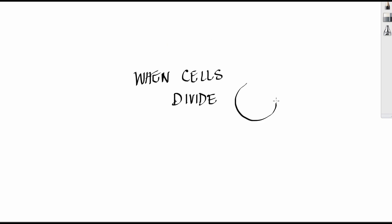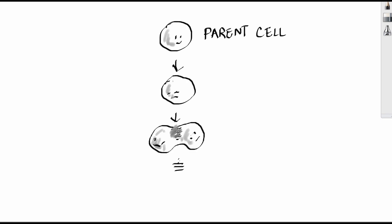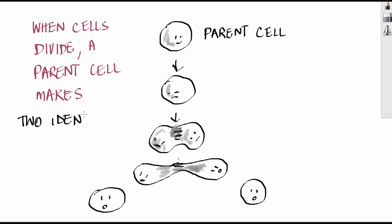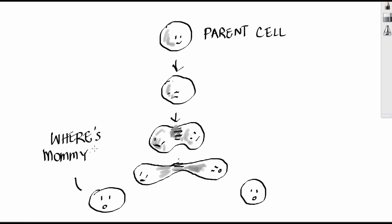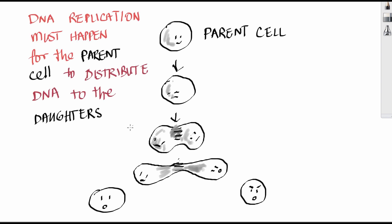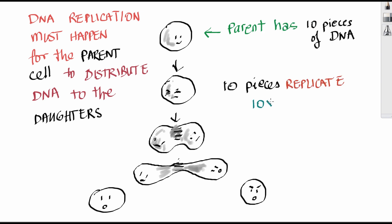When cells divide, they do DNA replication. When parent cells turn into daughter cells, then the parent disappear and the daughters are left. DNA replication must happen for the parent cell to distribute DNA to the daughters. So the parent has 10 pieces of DNA, and the 10 pieces replicate into 20, so that 10 pieces go to each daughter.